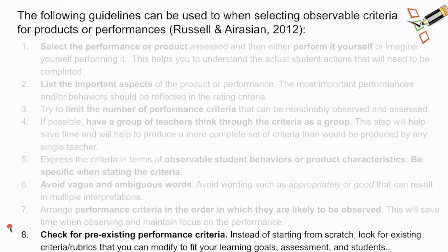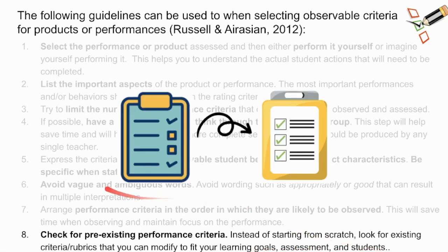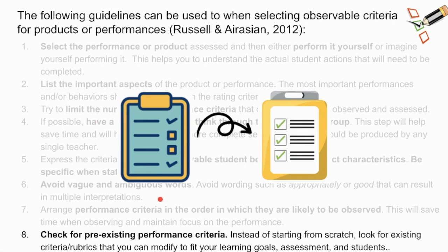One tip is to check for pre-existing performance criteria. Instead of always starting from scratch, we can look for existing criteria or rubrics to modify in order to fit our learning goals, the assessment, and our students. Chances are another teacher or many teachers have put together success criteria for an assessment similar to what you and your students are working on. We can find a handful and select the most relevant components, then revise them into a success criteria that works for us. But be careful about just using somebody else's rubric—what someone else developed isn't exactly what you need for your specific learning goals, assessment, and students.